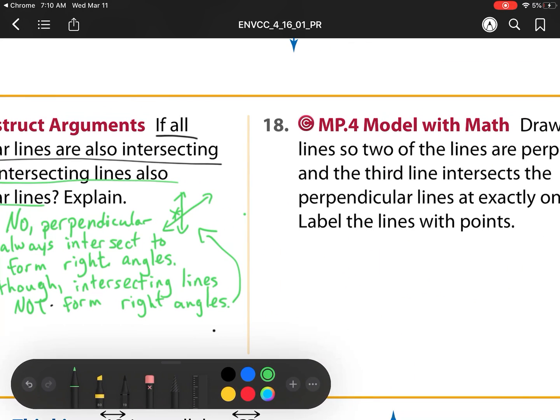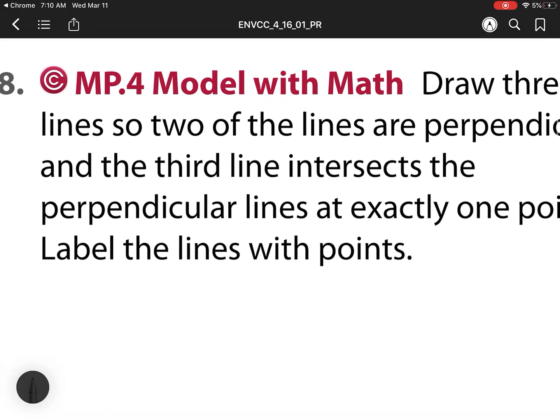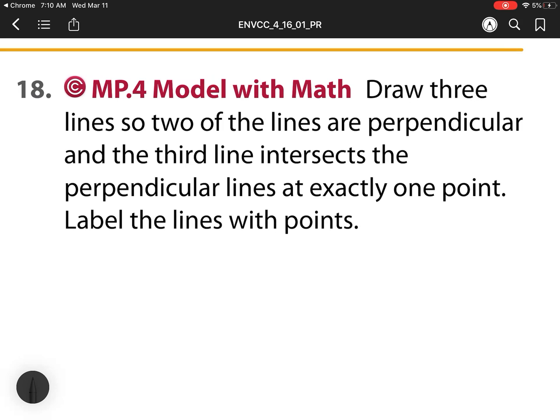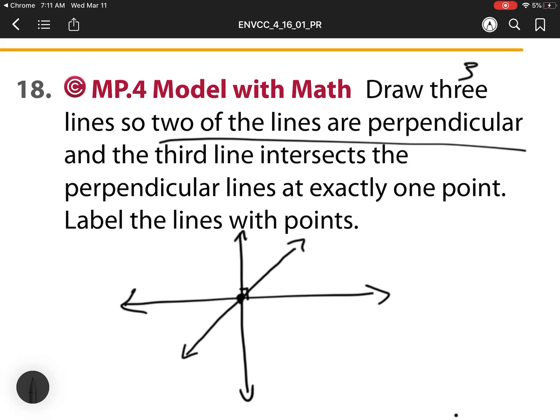Heading off to number 18. Draw three lines, so two of the lines are perpendicular. And the third line intersects the perpendicular line at exactly one point. So here we need to draw three lines. And two of the lines are perpendicular. So let's start with that easy part there. So there's one line, two lines, and they are perpendicular. And now it says the third line intersects the perpendicular line at exactly one point. So where can I intersect my perpendicular? Well, it's going to have to go right through the middle. So there's my intersection at one point right there.